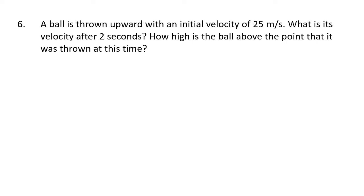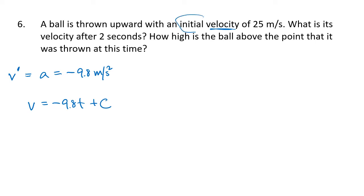Now we're going to work on application problems involving movement due to gravity. The acceleration due to gravity in metric units is negative 9.8 meters per second squared. Since acceleration is the derivative of velocity, velocity v is the antiderivative of acceleration, which is negative 9.8t plus c. When the problem tells us the initial velocity is 25 meters per second, that means v of 0 equals 25 — this is an initial value problem, and we just have to identify the initial values from the words in the problem.